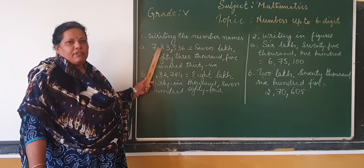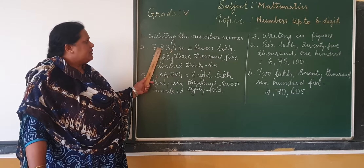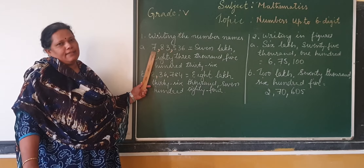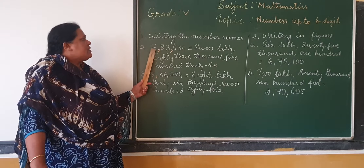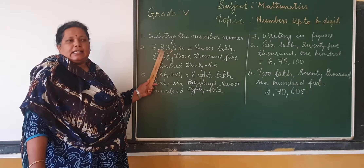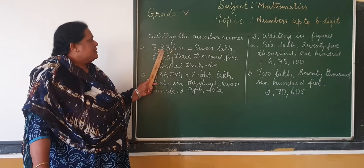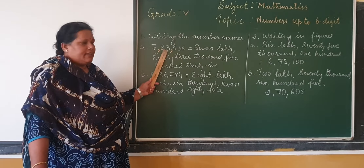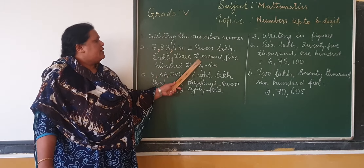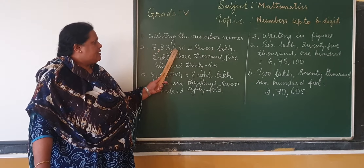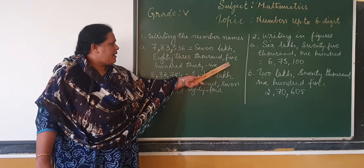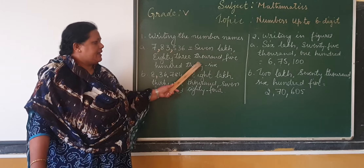Let us see how to write the given number in words. Here, in the lakhs period, the number is seventy, so seven is in lakhs. In the thousands period, there is a three, so fifty-three thousand. In the ones period, there is five hundred thirty-six, so five hundred thirty-six.